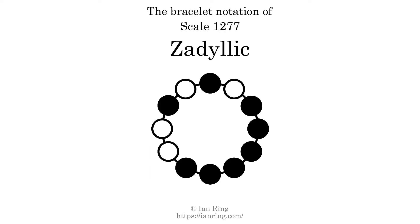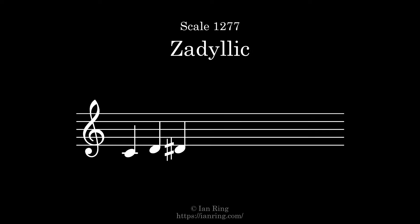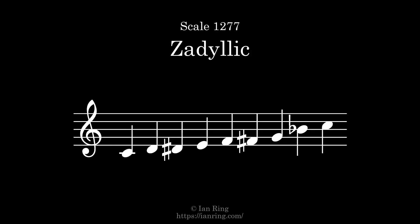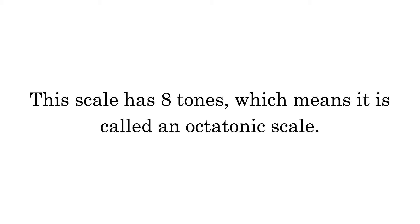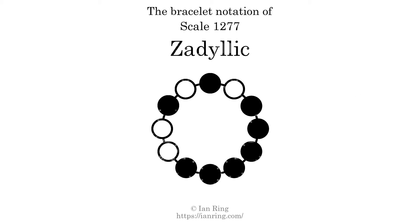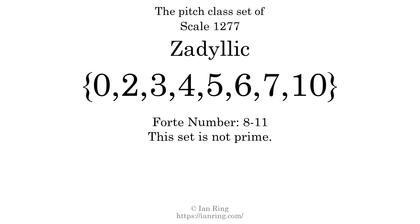Today we will talk about scale 1277, zodillic, which sounds like this. This scale has 8 tones, which means it is called an octatonic scale. This is a bracelet notation diagram of scale 1277. The shaded circles represent tones that appear in the scale, and they are read clockwise, starting at the top. The pitch class set for this scale is 0, 2, 3, 4, 5, 6, 7, 10. The fourth class is 8, 11.